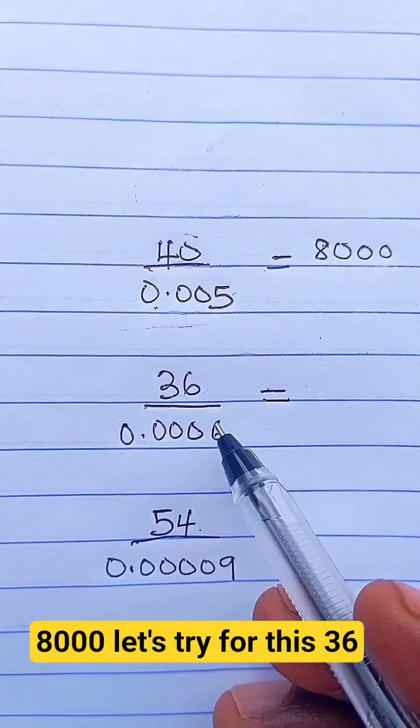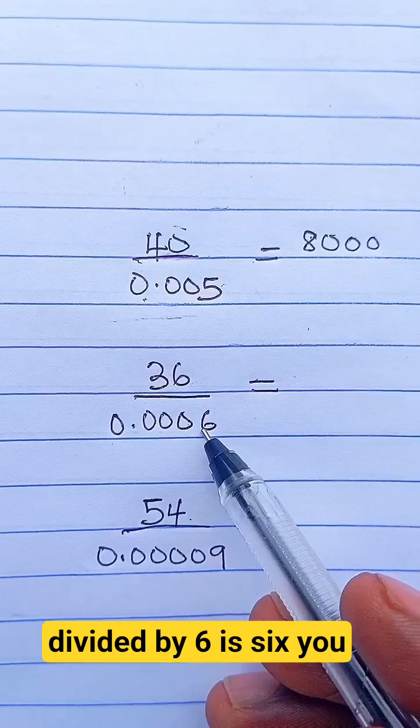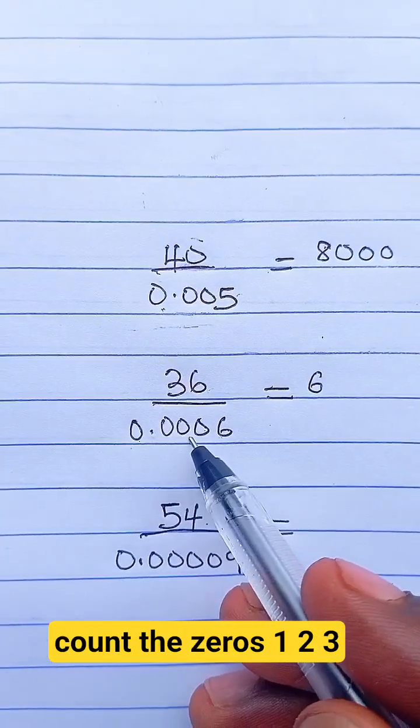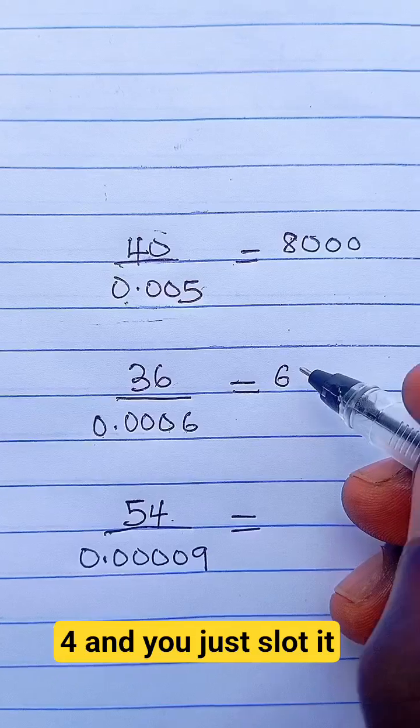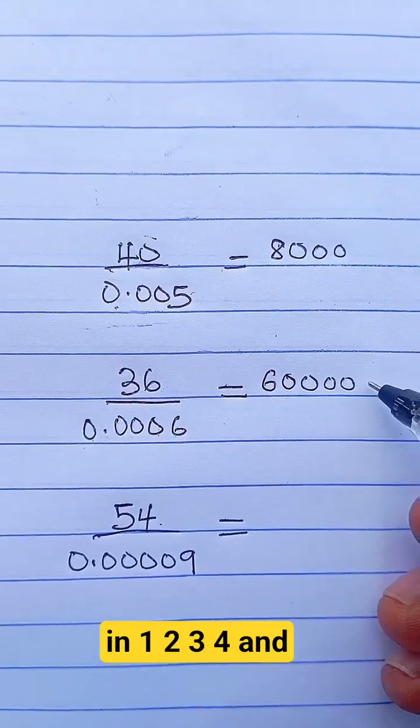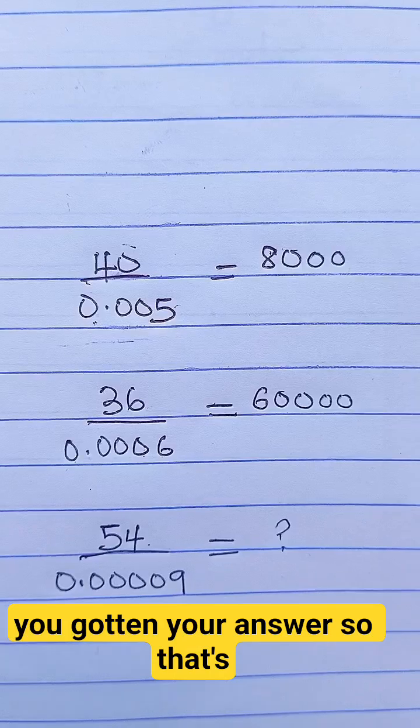Let's try this: 36 divided by 6 is 6. Count the zeros - 1, 2, 3, 4. And you just slot it in: 1, 2, 3, 4. And you've got your answer. That's how it is.